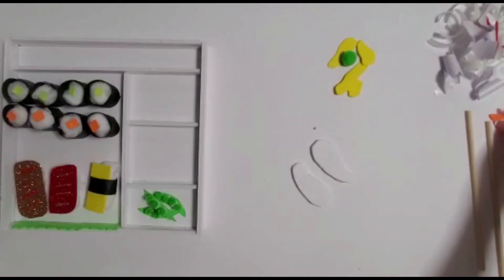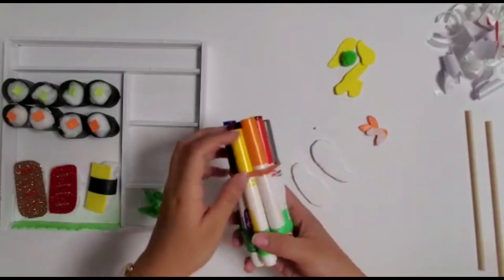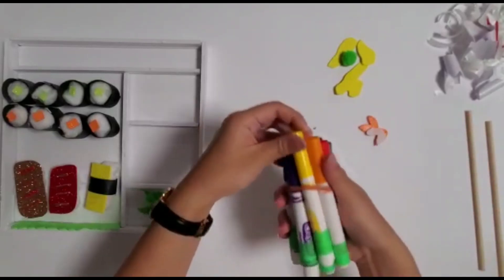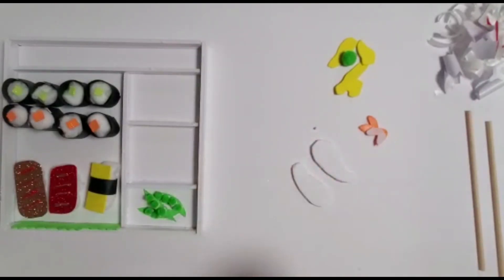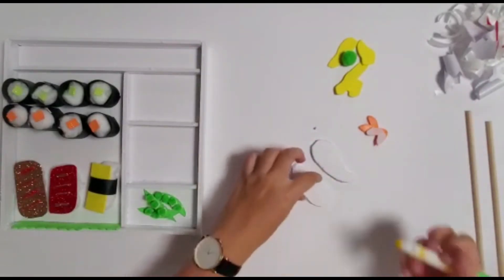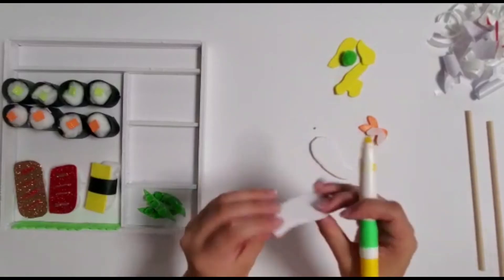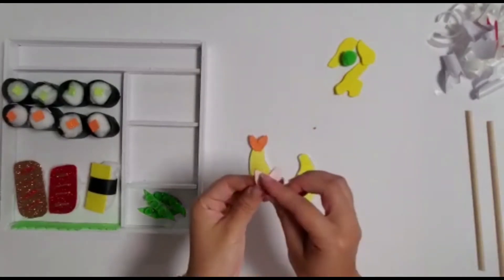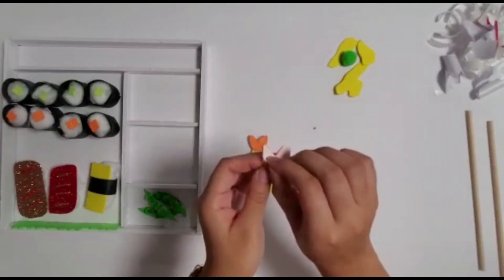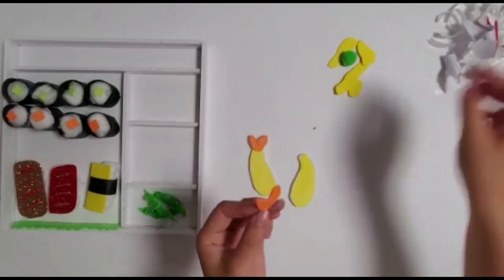Now let's make some tempura or fried shrimp. Wrap the curved pieces of foam board and the v-shaped pieces of glitter foam. Color the foam board yellow to look like tempura and stick the glitter foam on the narrower end of the foam boards.